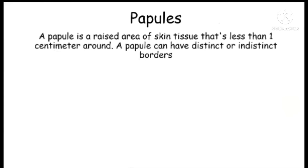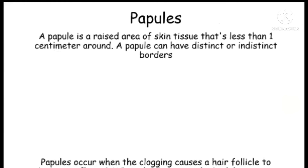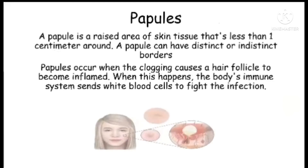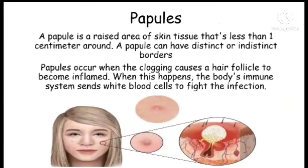A papule is a raised area of skin tissue that's less than one centimeter around. It can have distinct or indistinct borders. As you can see in the picture, a papule is like a large pimple but less than one centimeter. Papules occur when clogged pores cause a hair follicle to become inflamed, and the body's immune system sends white blood cells to fight the infection.